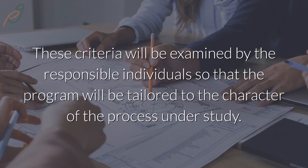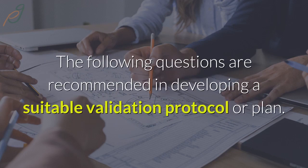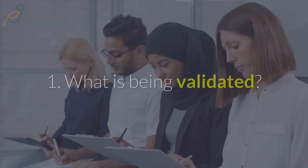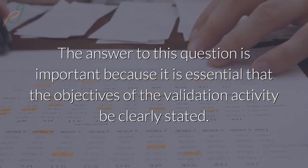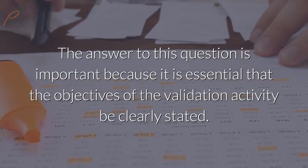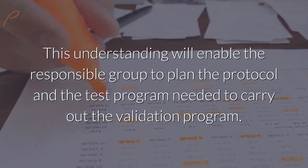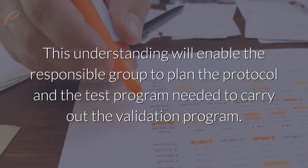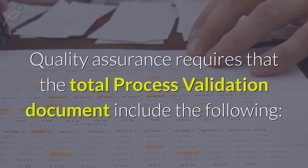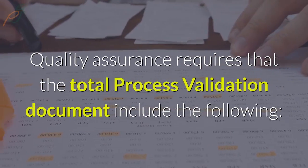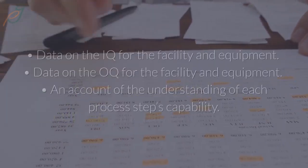These criteria will be examined by the responsible individuals so that the program will be tailored to the character of the process under study. The following questions are recommended in developing a suitable validation protocol or plan. Question one: what is being validated? The answer is important because it is essential that the objectives of the validation activity be clearly stated. This understanding will enable the responsible group to plan the protocol and the test program needed to carry out the validation program.